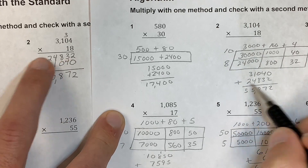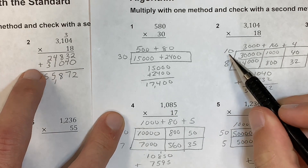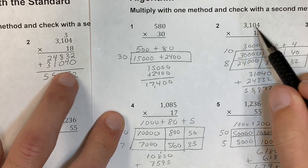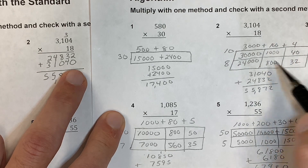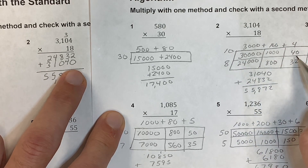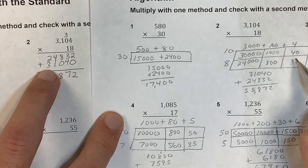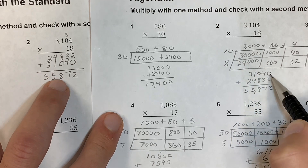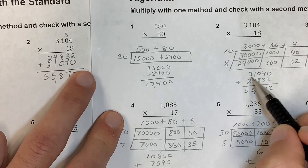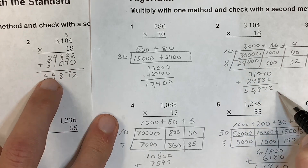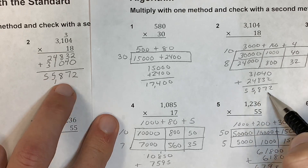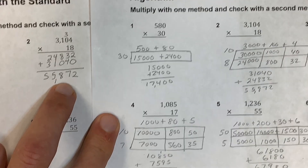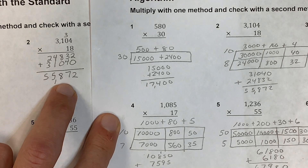The 10 times 3,104 gives our top partial number, and the 8 times 3,104 gives the bottom — we add them together and get the same final answer. So the standard algorithm and area model produce identical results, just organized differently. Adding those together in the last step confirms they match.